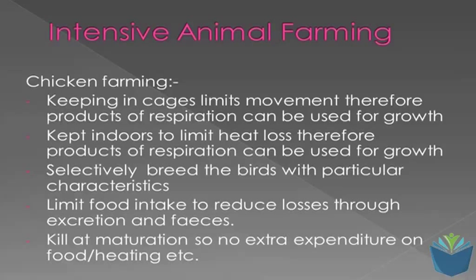There are methods by which intensively reared animals can produce this. One way is to keep them in cages. It's quite a contentious issue at the minute — how we treat animals before they're slaughtered. One way to ensure that they grow to a larger size is to limit their movement. If they're respiring, the products of that respiration can then be used for growth. If they're moving around, more of the products of respiration will be used for things like movement and reproduction. By keeping them in cages, it limits movement and therefore all of the energy produced in respiration can go towards growth.